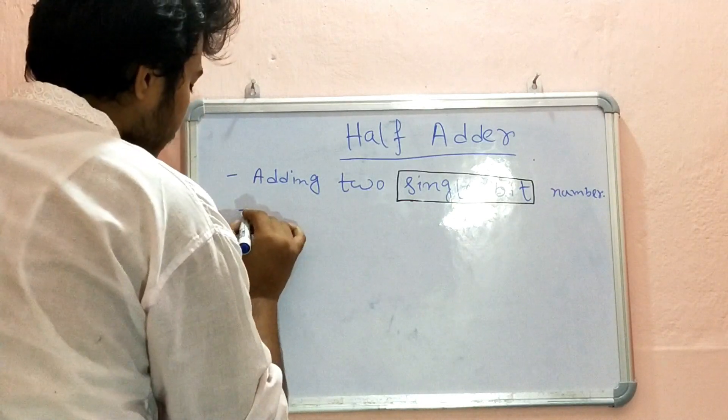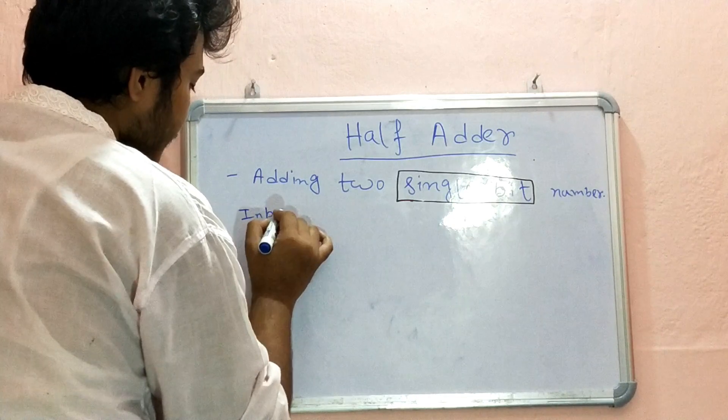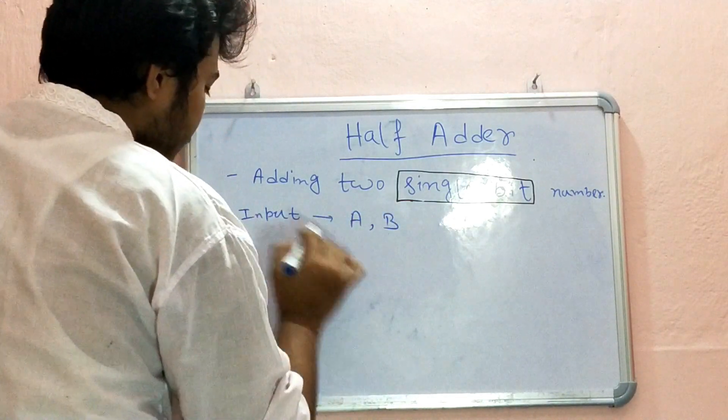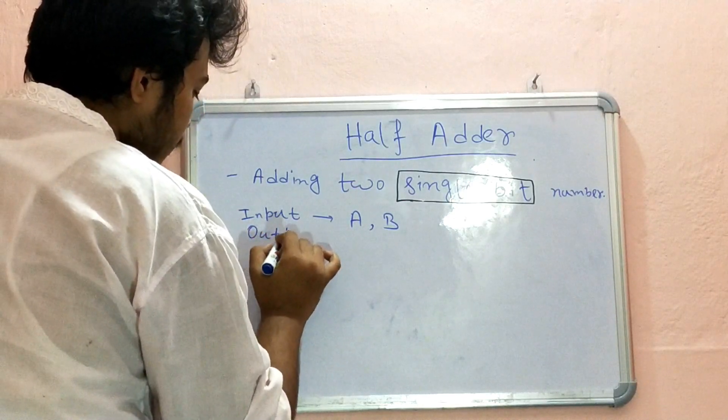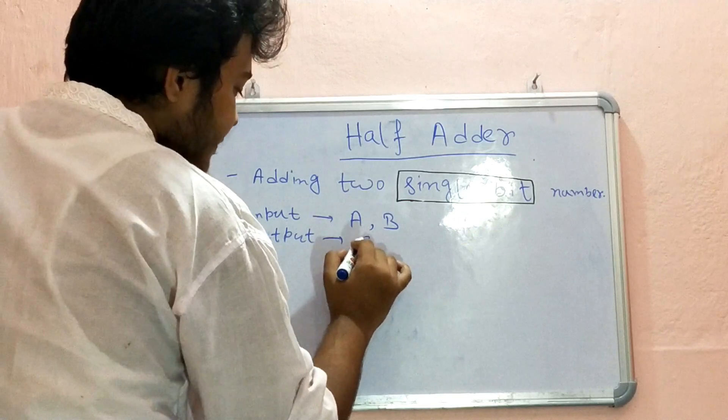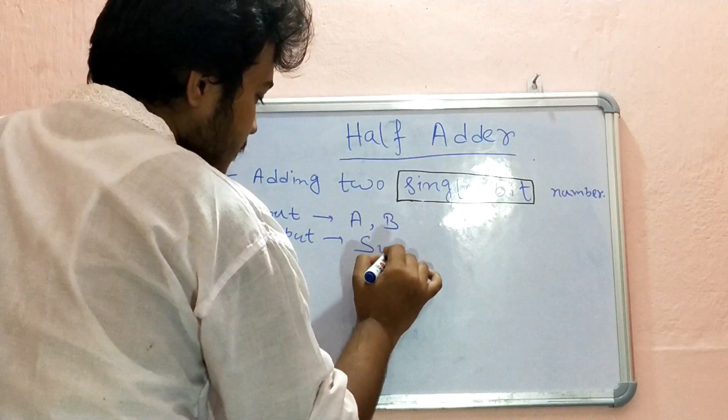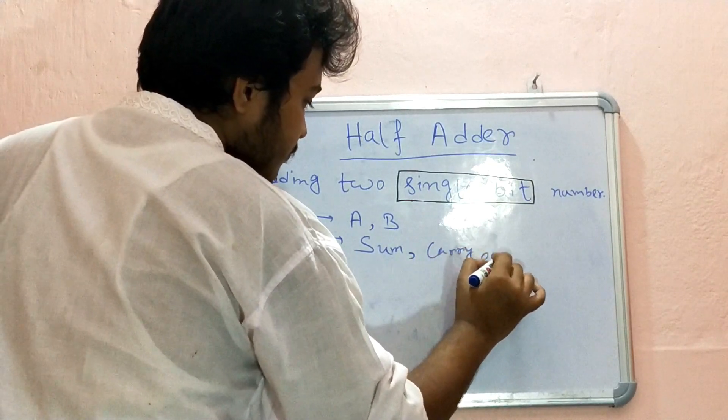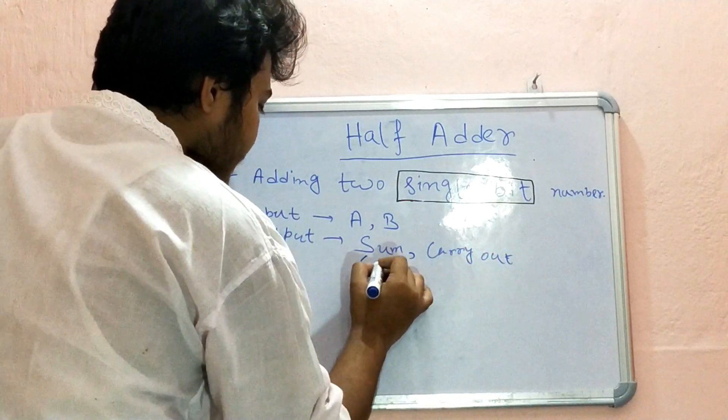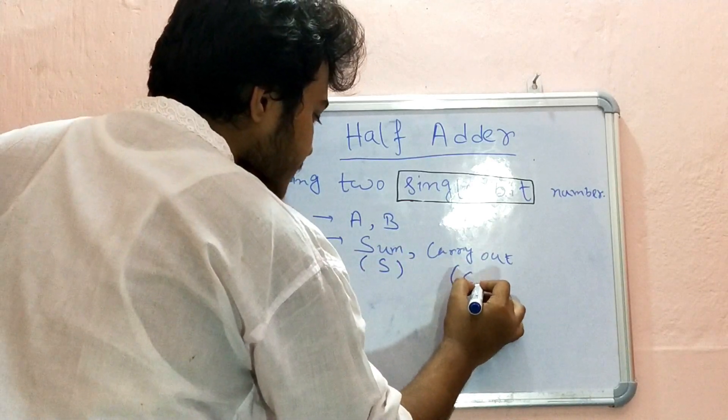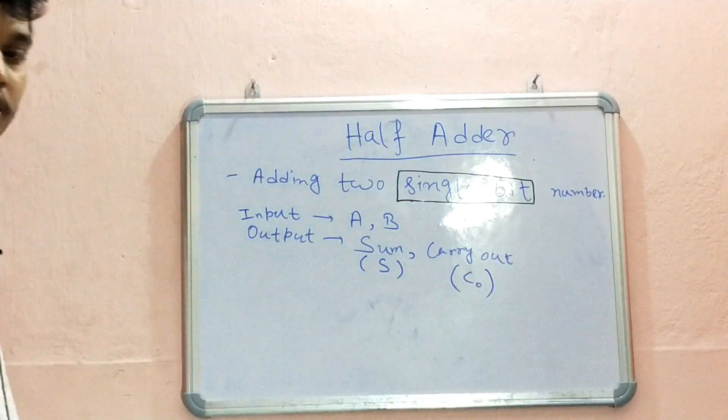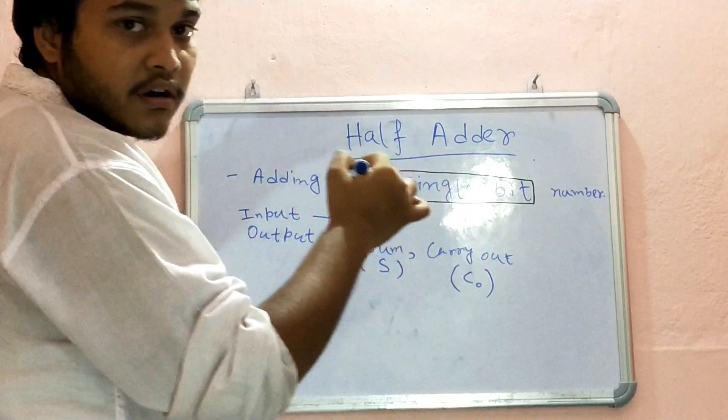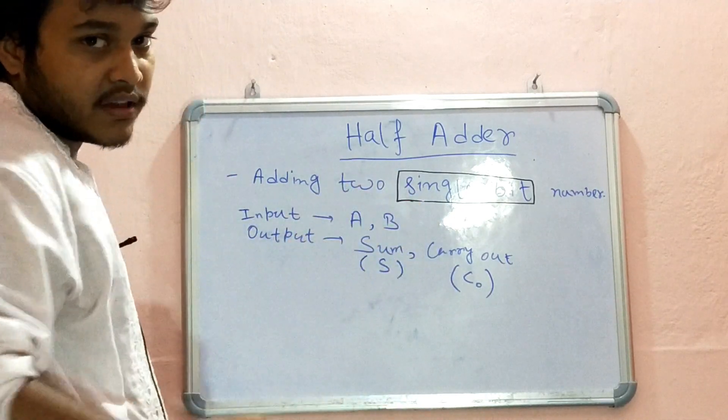Suppose we have inputs A and B, and the outputs are two outputs: one is sum and one is carry out. Sum we denote as S and carry out we denote as Co. So this half adder does not consider any carry input, only two bits add in this adder.